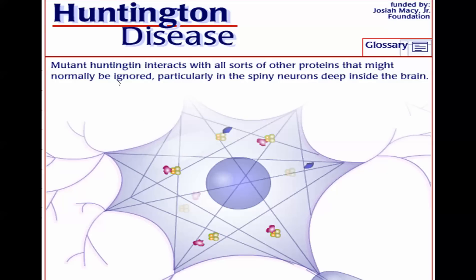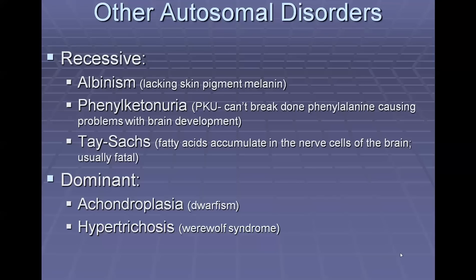In Huntington's disease, there is a protein called huntingtin that interacts with other proteins in the brain, and when that gets affected, that's where the issues come. Some other autosomal recessive disorders include albinism, which is lacking skin pigment — melanin — and phenylketonuria, or PKU, where you can't break down phenylalanine.